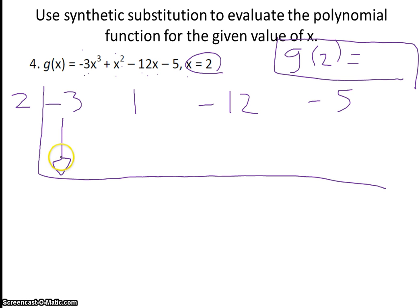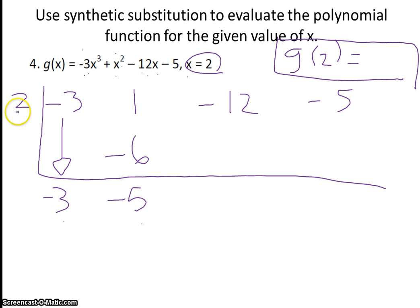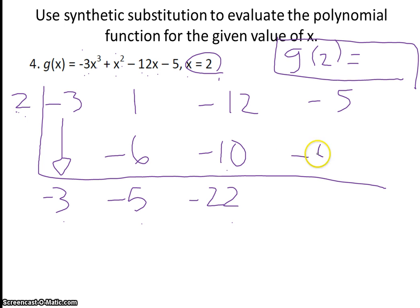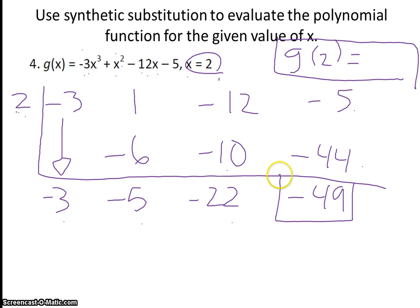Here we move on to synthetic substitution. I'm going to bring my negative 3 down. I always multiply negative 3 by the outer number, which gives negative 6. Add straight down, which is negative 5. Then multiply to get negative 10, add straight down to give me negative 22. I multiply those numbers to get negative 44, and add straight down, which is negative 49. So g of 2 equals negative 49.